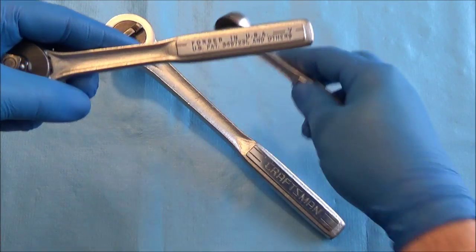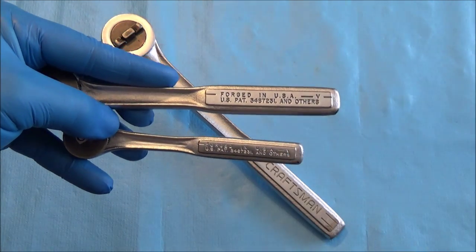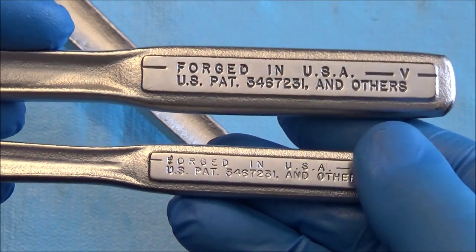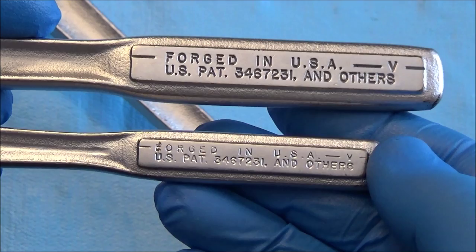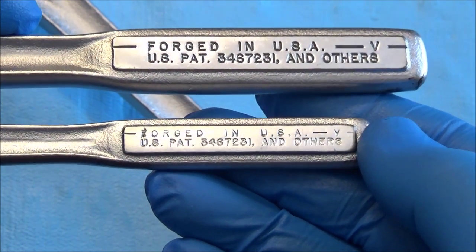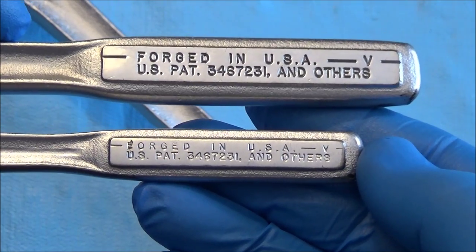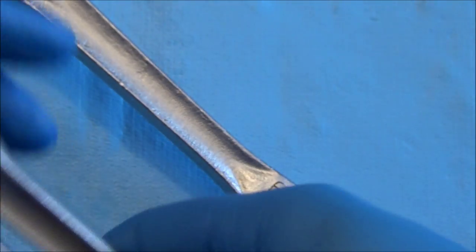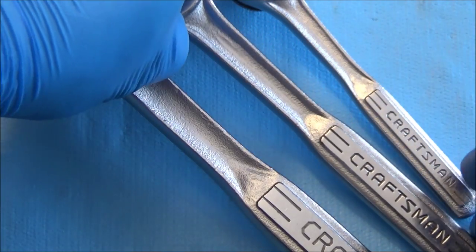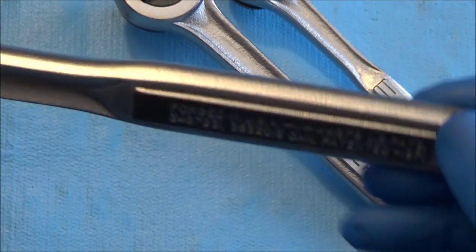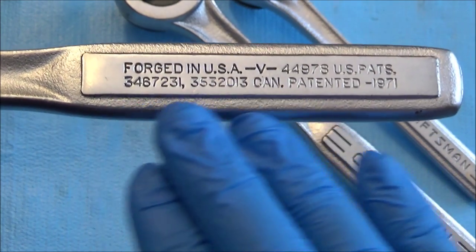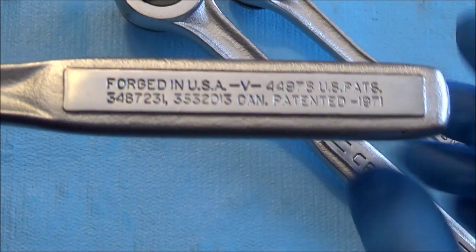If we grab both the three-eighths and this quarter inch here, you'll see that we don't have any serial numbers like we do on some of the other Craftsman ratchets. It just says Forged in the USA and then has some patent numbers on it, which isn't very helpful. However, there are those that do.